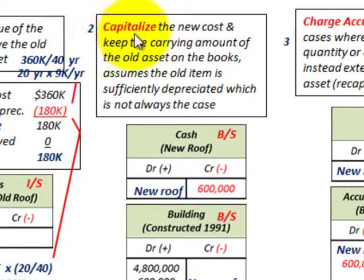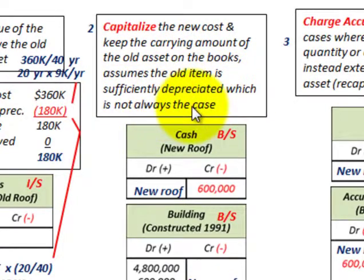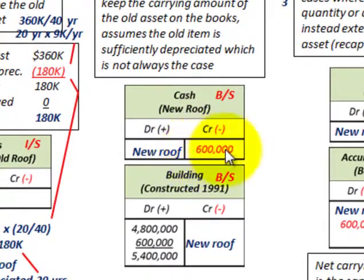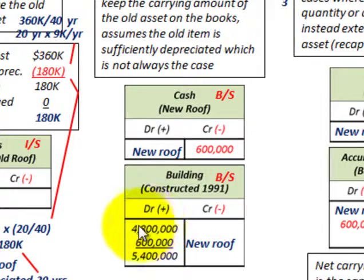Now let's look at the second method: capitalize the new cost and keep the carrying amount of the old asset on the books. This assumes the old item is sufficiently depreciated, which is not always the case — our old roof wasn't sufficiently depreciated, but nonetheless we'll keep it on the books. All we do here is credit our cash account for the new roof at $600,000, and debit our building account for $600,000 for the new roof. We've simply increased our building account from $4.8 million to $5.4 million.